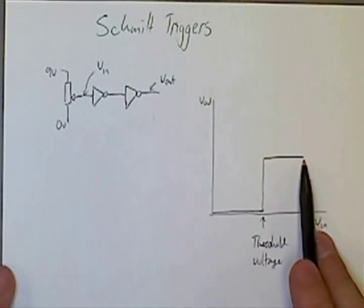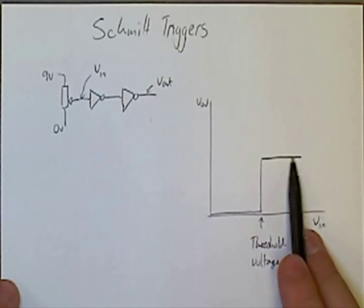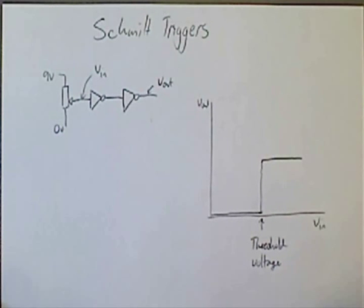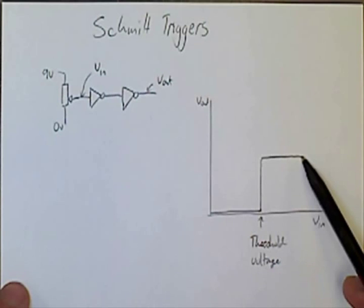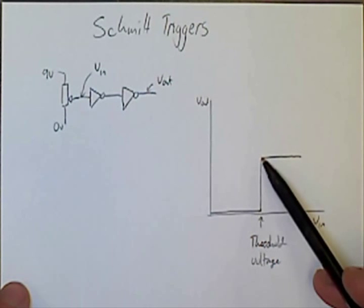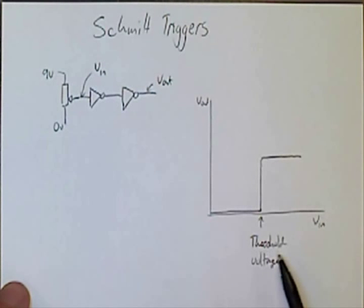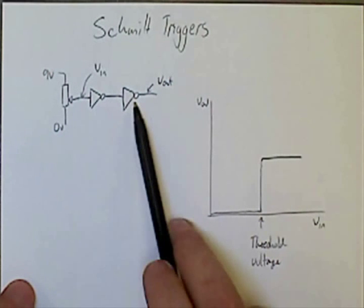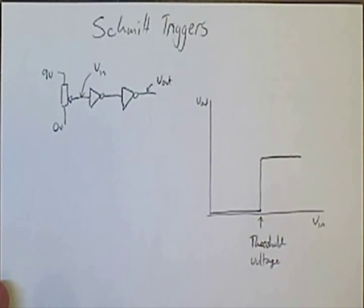If we were to go back again, if we decrease the voltage, we see that at the same threshold voltage, we get the same change of state happening. As we decrease the voltage, we reach our threshold voltage again, and we go back from a high to a low. The changing of state happens at the threshold voltage, and that is determined entirely by the two inverters there, not by the input voltage or the state of those inverters.